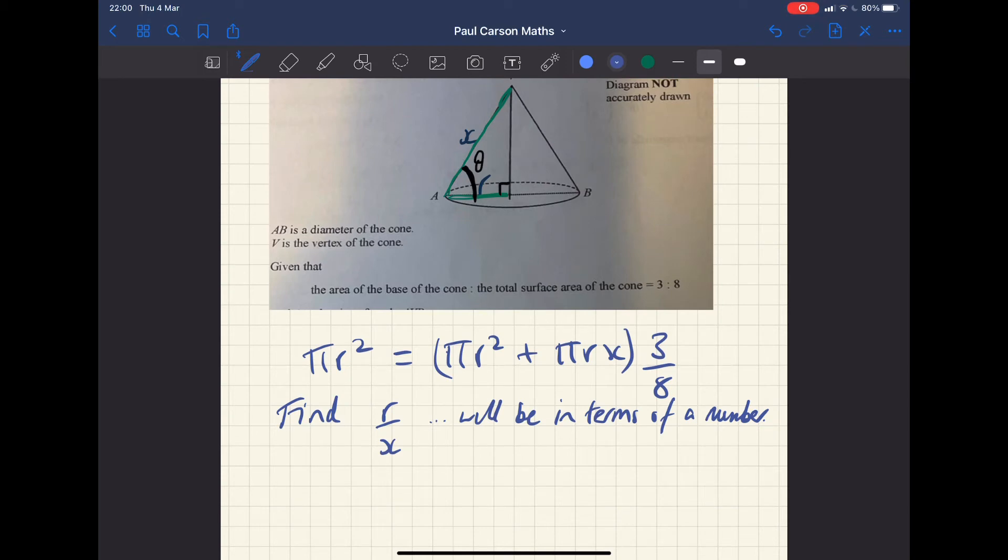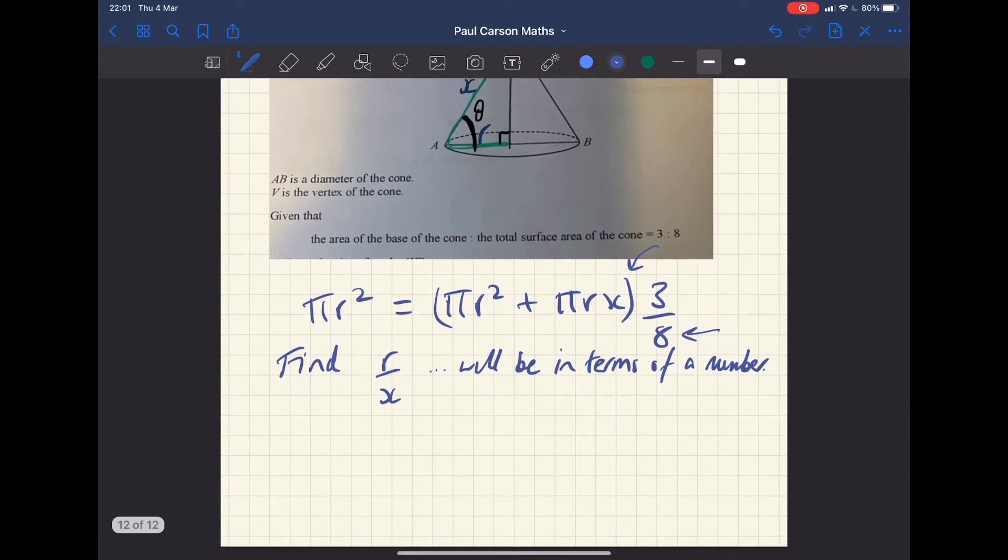That means we just need to rearrange what's above to make r over x the subject. I think initially that looks quite tricky. But if you do the usual things, which is get rid of the division, get rid of the brackets, that makes things a bit easier. So if I put in now, 8πr² is equal to πr² plus three πrx. But it says times that by three at the same time, just to save time, so πr² + 3πrx.